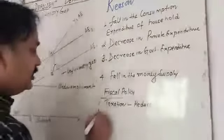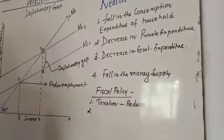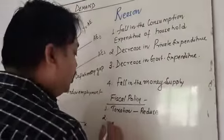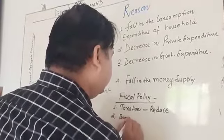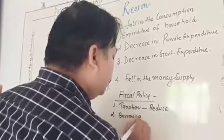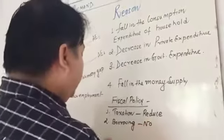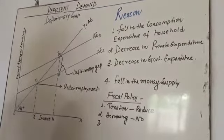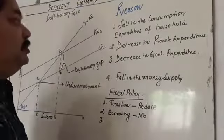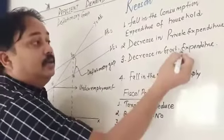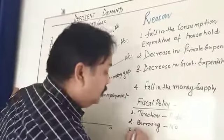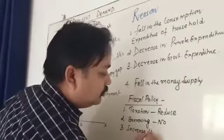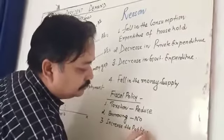The second measure is borrowing — borrowing should be discouraged. Government is not going to borrow. Third is public expenditure. The government is going to increase public expenditure, because decrease in government expenditure causes the deficiency gap. So, the government will increase public expenditure.